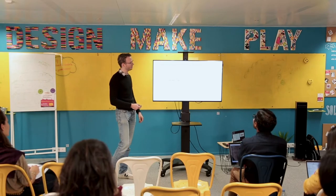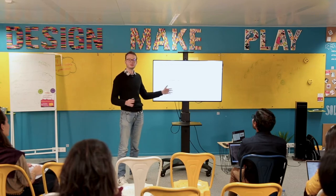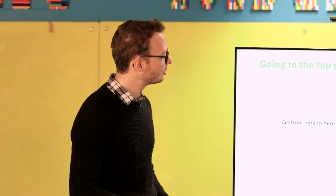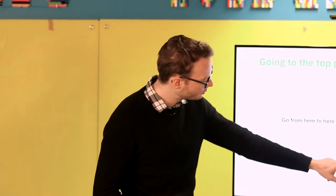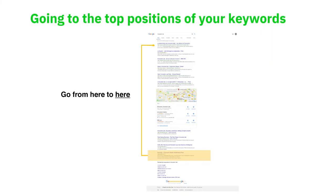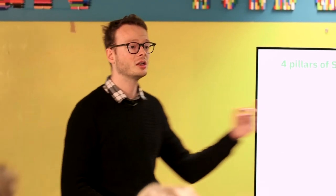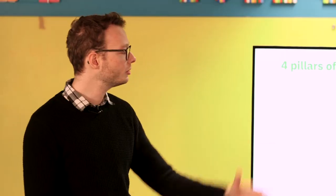SEO is basically when a user is typing a keyword on search engines like Google, Bing, or Yahoo. Your main challenge is to go from here to here on the keywords you are interested in. There are four main pillars: technical SEO, links, content — which is really important — and also all the user engagement and experience.